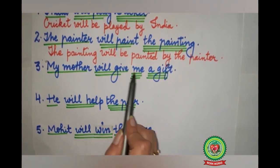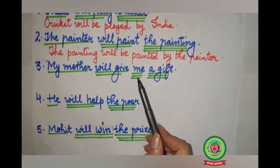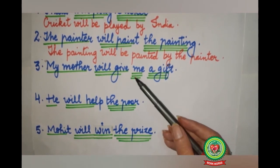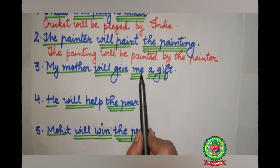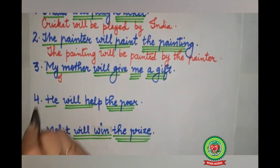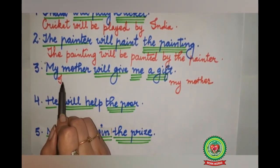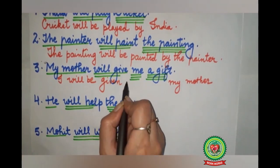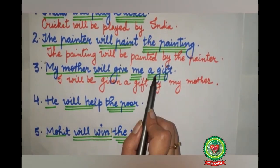The third sentence: 'My mother will give me a gift.' Here 'my mother' is subject, single underline. 'Will give' — double underline. There are two objects: 'me' and 'a gift'. Whenever a sentence has two objects, there are two different ways to write the passive. In the first case, we take 'me' as the object — it becomes 'I' as the subject. The sentence becomes: 'I will be given a gift by my mother.' Full stop.